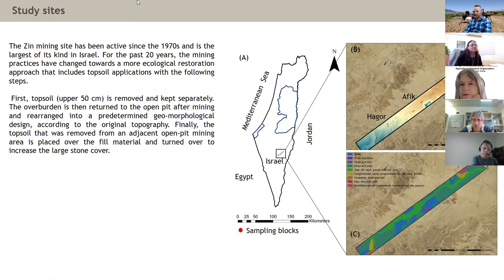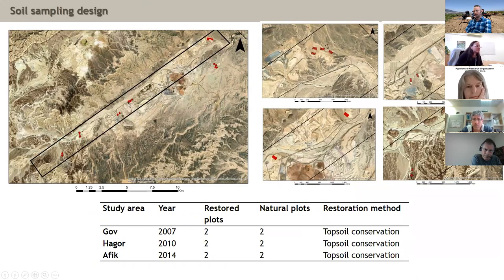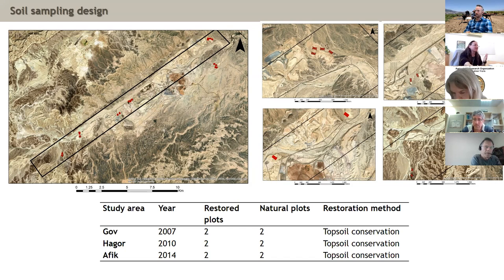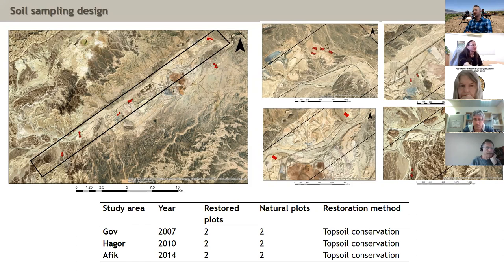There is a lot of shuffling of soil in these areas. We wanted to see if we can identify the restoration process by examining whether the soil can restore once the top soil is returned. We selected three sites — Gov, Afik, and Habor — each restored from different periods: 2007, 2008, and 2014. We took soil samples from both natural environments adjacent to the restoration areas. Overall we had 80 soil samples, 20 from each site — both natural and restored — to evaluate soil health.